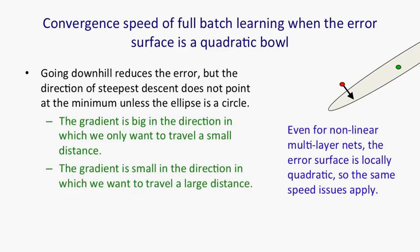Now, you might think that studying linear systems like this is not a good idea if you want to optimize big non-linear nets. But even for these non-linear multilayer nets, this kind of problem arises. It's a very similar problem that arises, even though the error surfaces aren't globally quadratic bowls. Locally, they tend to be very curved in some directions and very uncurved in other directions.